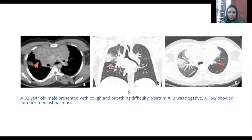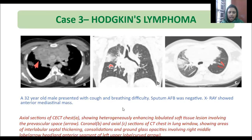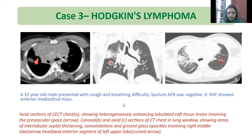Third case: a 32-year-old male presented with cough and breathing difficulty. Sputum AFB was negative and X-ray showed an anterior mediastinal mass. Axial CT chest images showing heterogeneously enhancing lobulated soft tissue lesion involving the pre-vascular space. Coronal and axial CT chest in lung window showing areas of interlobular septal thickening, consolidation, and ground glass opacities involving the right middle lobe as well as the anterior segment of the left upper lobe. Biopsy revealed Hodgkin's lymphoma.